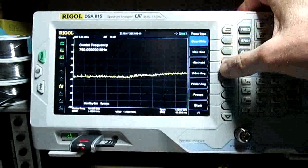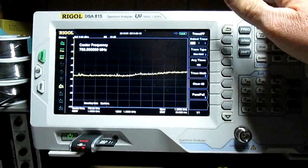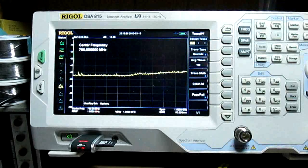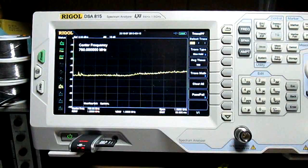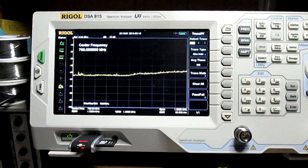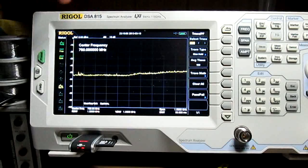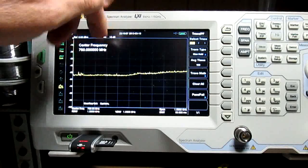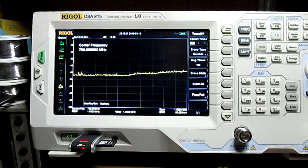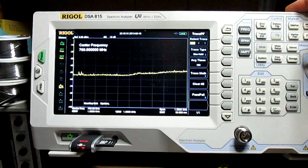There's a function under trace called max hold. When you hit that, every time it gets a hit and sees a signal, it puts it on the screen and leaves it there. If you get enough times where the generator is seen by the analyzer, it's going to put that on the screen and leave it there. Do that thousands of times and eventually you're going to get a trace.